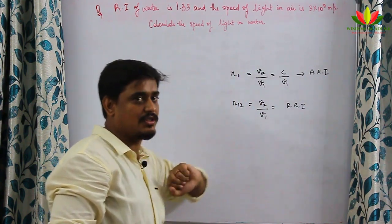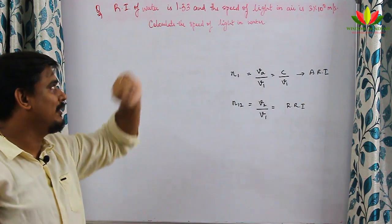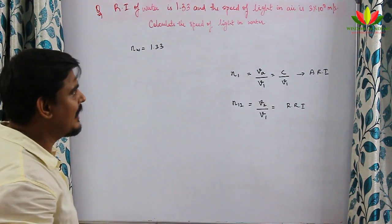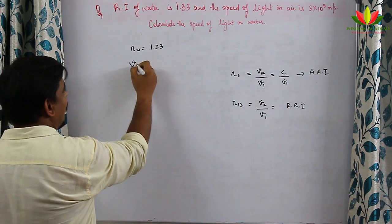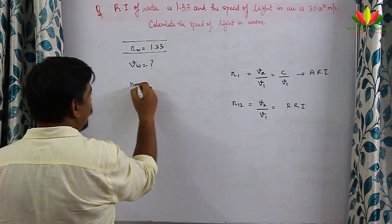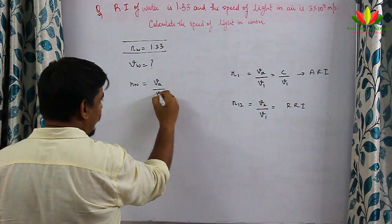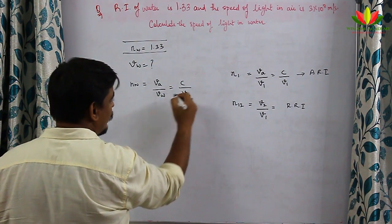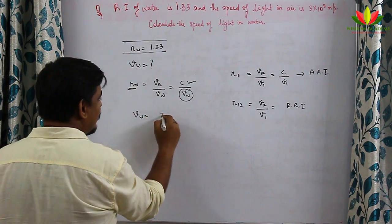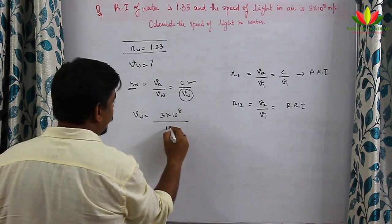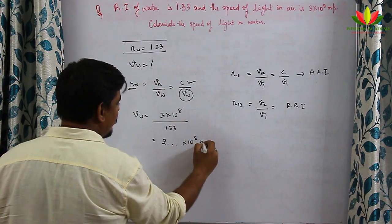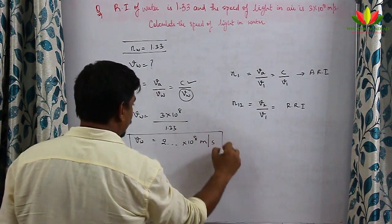Let's solve a question: refractive index of water is 1.33, and speed of light is 3×10⁸ m/s — find the velocity of light in water. Using absolute refractive index: n_w = c / v_w, so v_w = (3×10⁸) / 1.33, which gives approximately 2.26×10⁸ m/s.